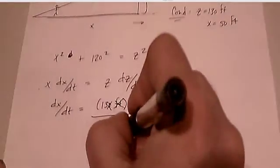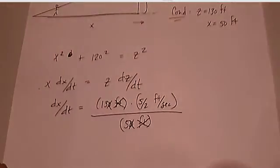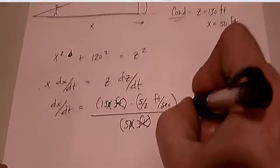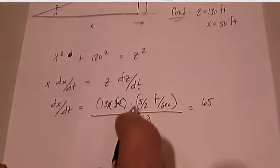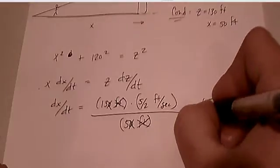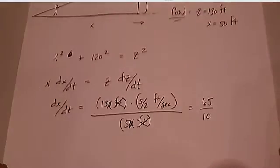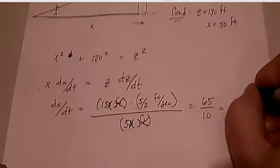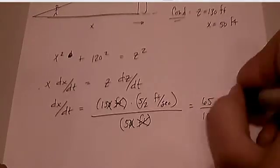The 10 right here cancels with the 10 right here, and you're going to wind up getting 13 times 5, which is 65, over 2 times 5, which is 10. Or you could cancel out the 5s, obviously, and you're going to wind up with 13 halves feet per second.